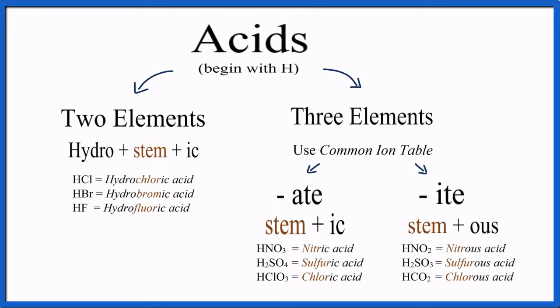Naming acids is all about patterns. If you learn the pattern, a few exceptions, and you're good to go. We'll use this flowchart here to name some simple acids, the type you'll see in a general chemistry course.